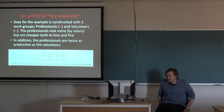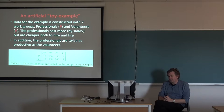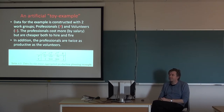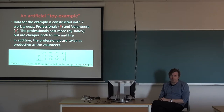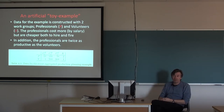Let's look at an artificial toy example to show how this works. I introduce toy numbers with only two work groups: professionals P and volunteers V. The assumptions are that professionals cost more by salary, but they are cheaper both to hire and fire. This seems reasonable — getting volunteers may require more effort since they're not getting paid, making the hiring cost bigger compared to professionals.